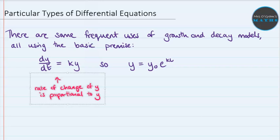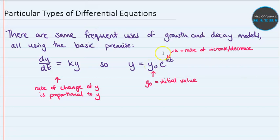So what we have on the left here is this proportional differential equation. It's saying that the rate of change of y, whatever y is that we're measuring, is proportional to the value of y itself. And then that becomes this equation on the right, that should be kt, where y is equal to y0 e to the kt, where y0 is the initial value of the size of y. And then k in that equation is the rate of increase or decrease that we're seeing in our context.